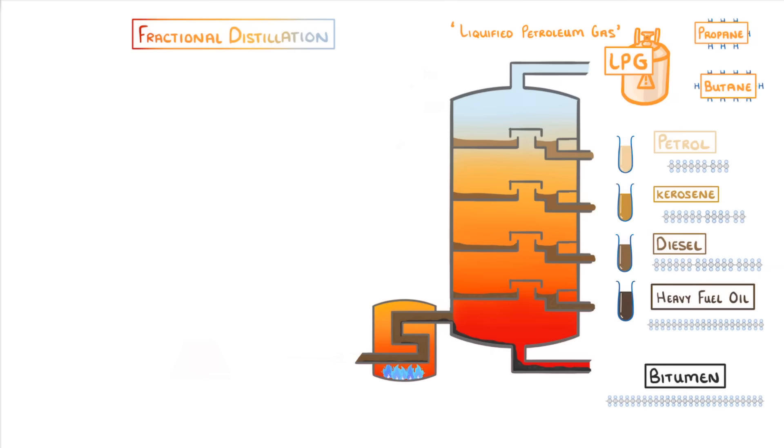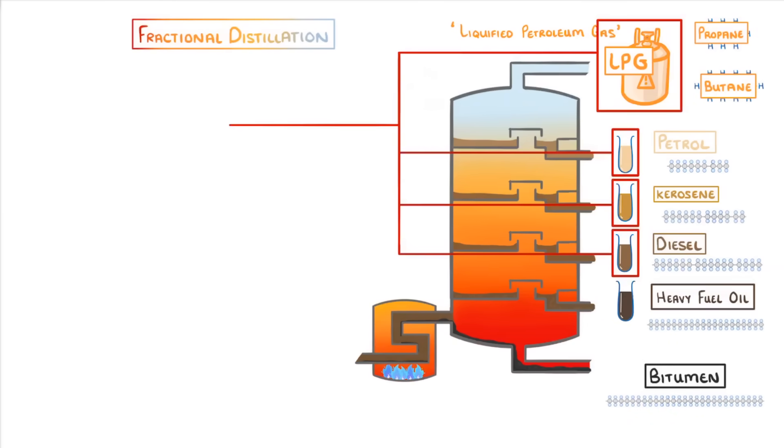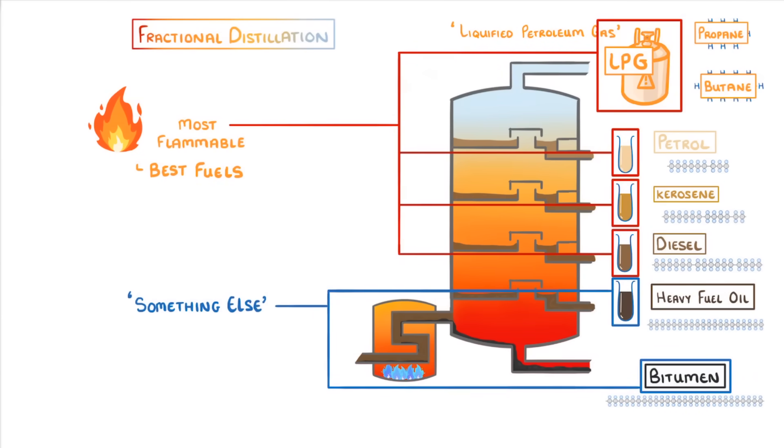If we compare these different groups or fractions, the ones towards the top, which are the shorter chains, are the most flammable, and so they tend to make the best fuels. Meanwhile, the longer chain hydrocarbons here at the bottom are often poor fuels, so are instead either used for something else or can be broken down into smaller hydrocarbons in a process called cracking, which we'll take a look at in the next video.